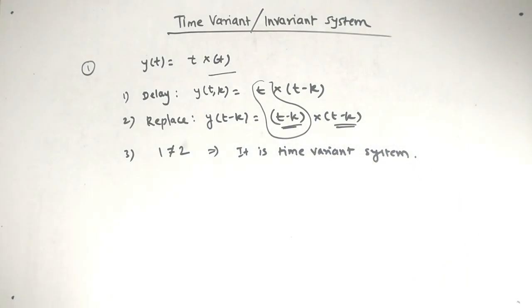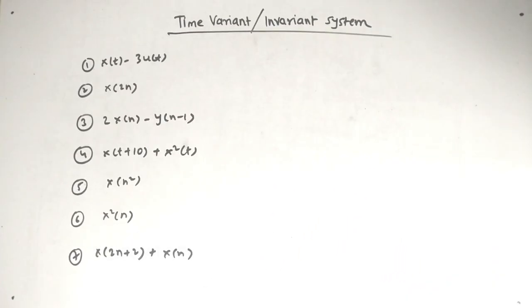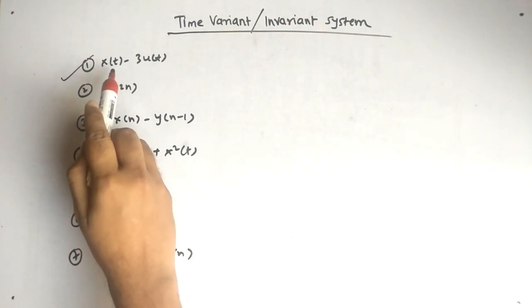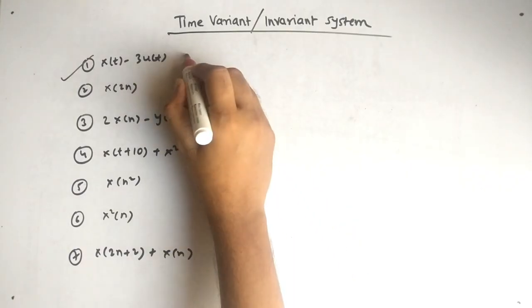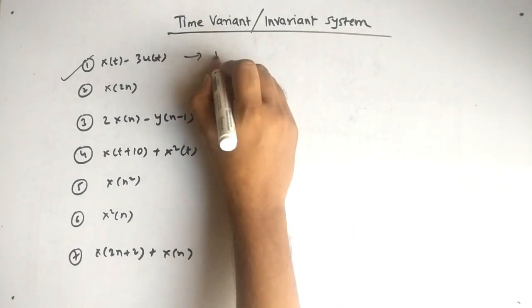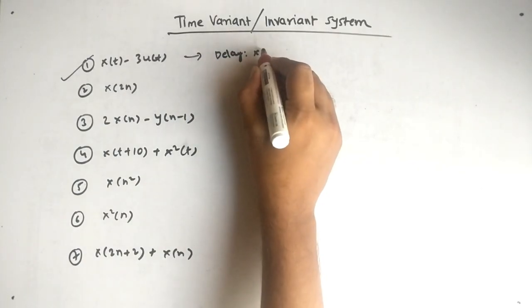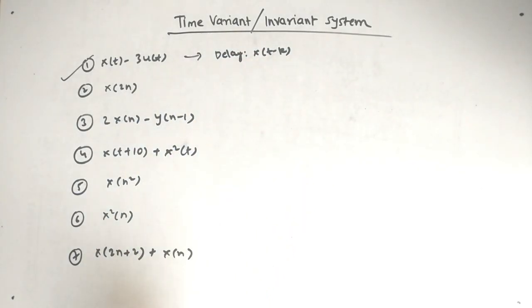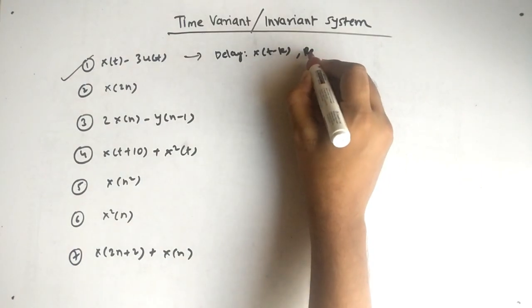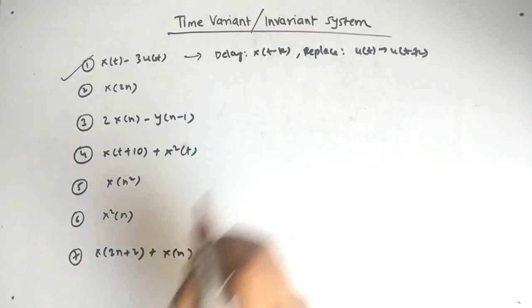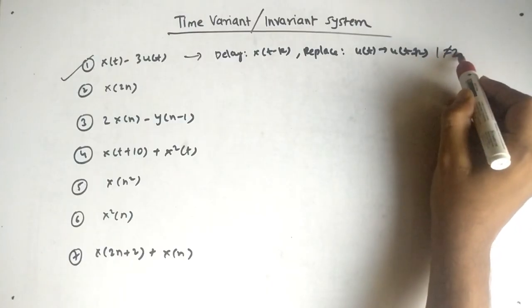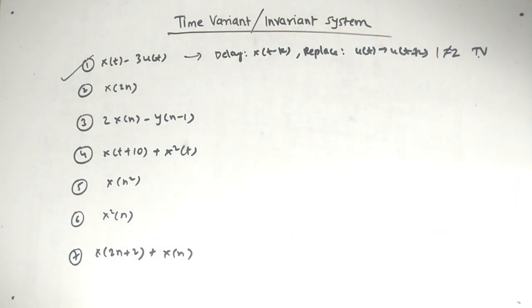Since one is not equal to two, it is a time variant system. Now let's solve the next question orally. For y(t) = x(t − 3) · u(t): when we delay, x(t) becomes x(t − 3 − k) but u(t) remains unchanged. When we replace, u(t) also changes to u(t − k). So clearly one is not equal to two — this is time variant.